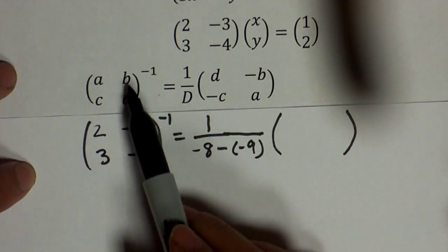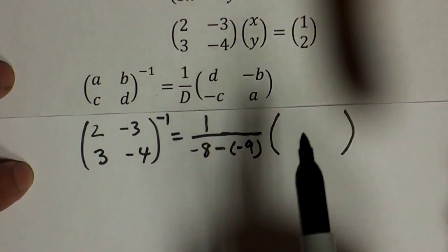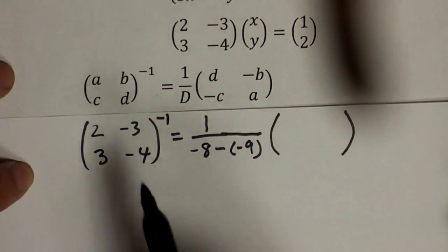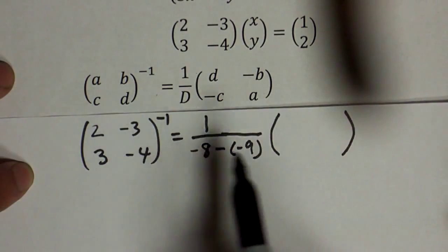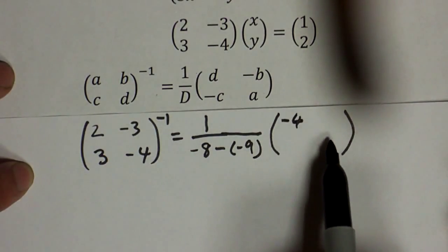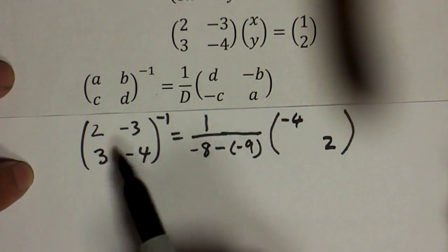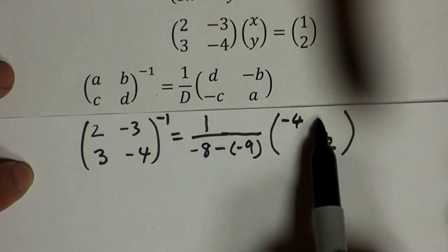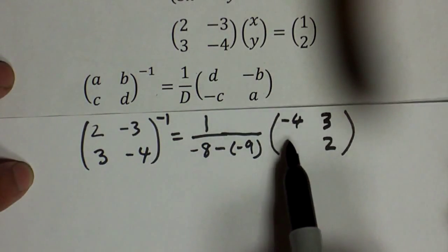The formula says: take the diagonal elements and change their places, and b and c must be negated. So we take this diagonal, change their places: negative 4 and 2. These two should be negated, so you have positive 3 and negative 3.